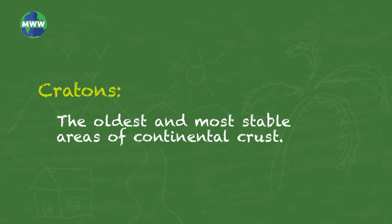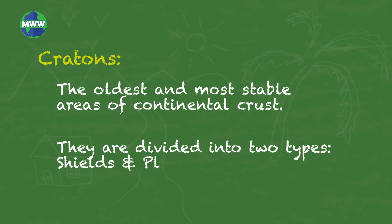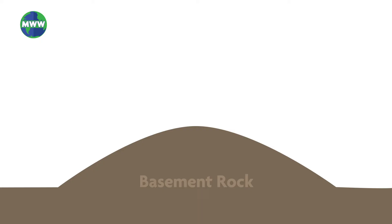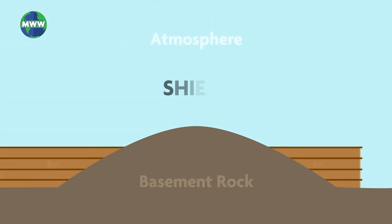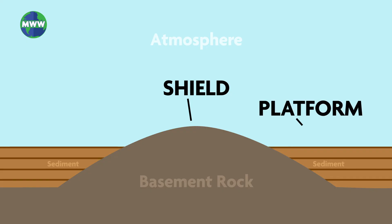Cratons are the oldest and most stable areas of continental crust. They are divided into two types: shields and platforms. Shields are ancient rocks in the interior of continents exposed to the atmosphere. Platforms are where the oldest underlying rock formations, or basement rock, is buried in sediment.